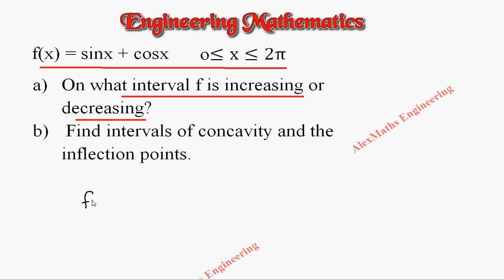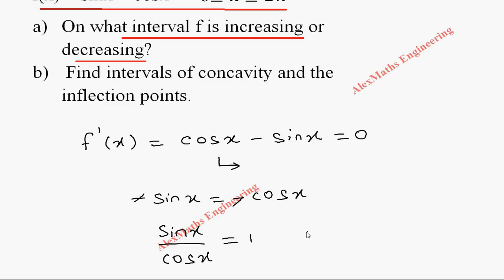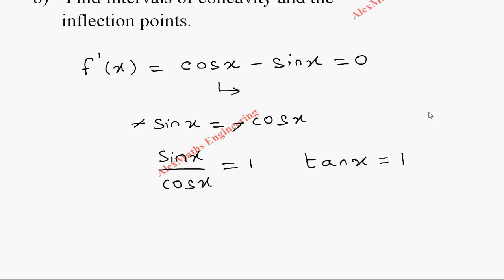Let's find f'(x). f'(x) equals cos x minus sin x. We equate to 0, then carry cos x to the other side: minus sin x equals minus cos x. Cancelling the negatives, we get sin x divided by cos x equals 1, which means tan x equals 1.